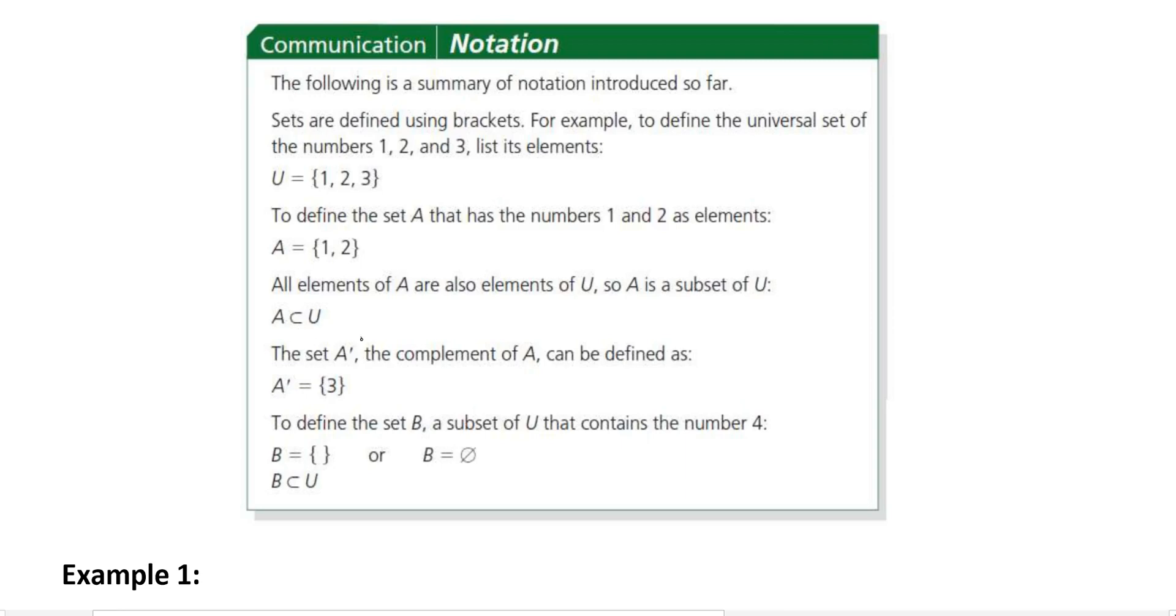When you see this little, looks like an apostrophe, it means the complement. So, the set A prime, or A complement, the complement of A can be defined as, and you can see there. So, A only lists 1 and 2. The complement would be 3. So, that's the one that they didn't state.